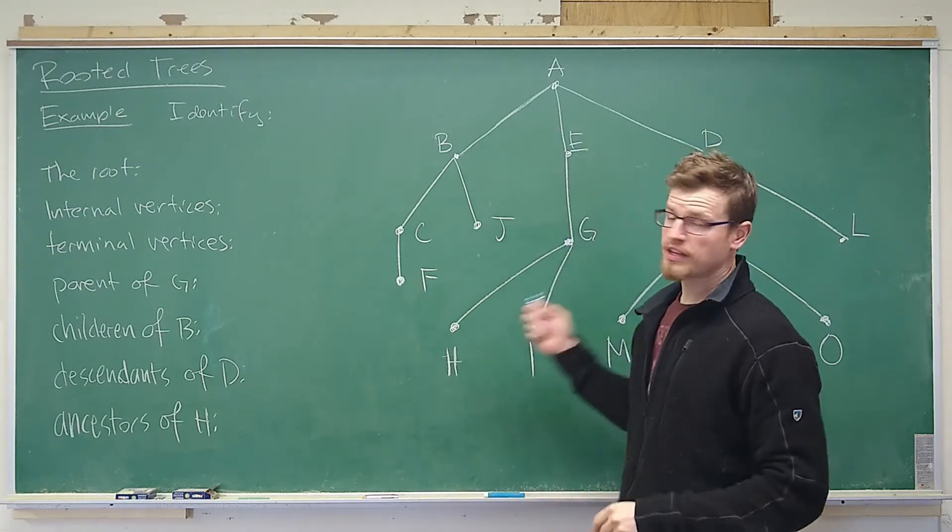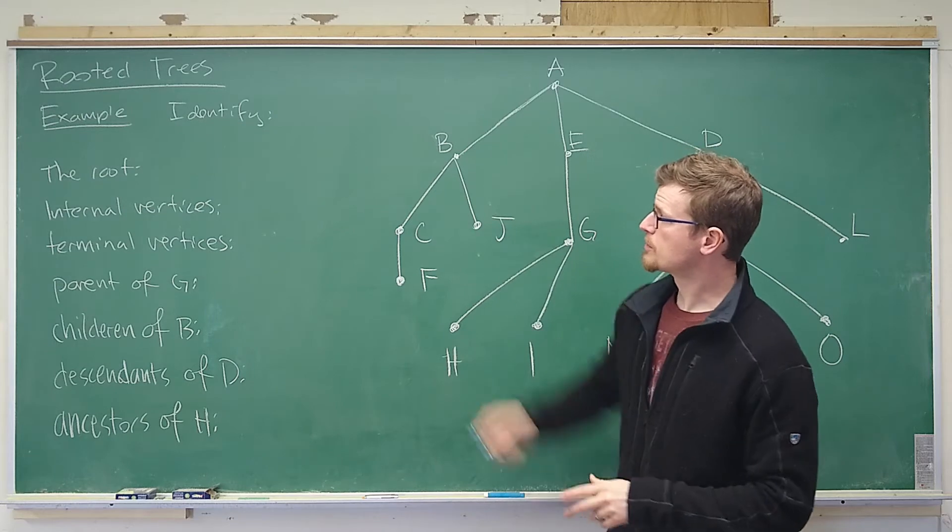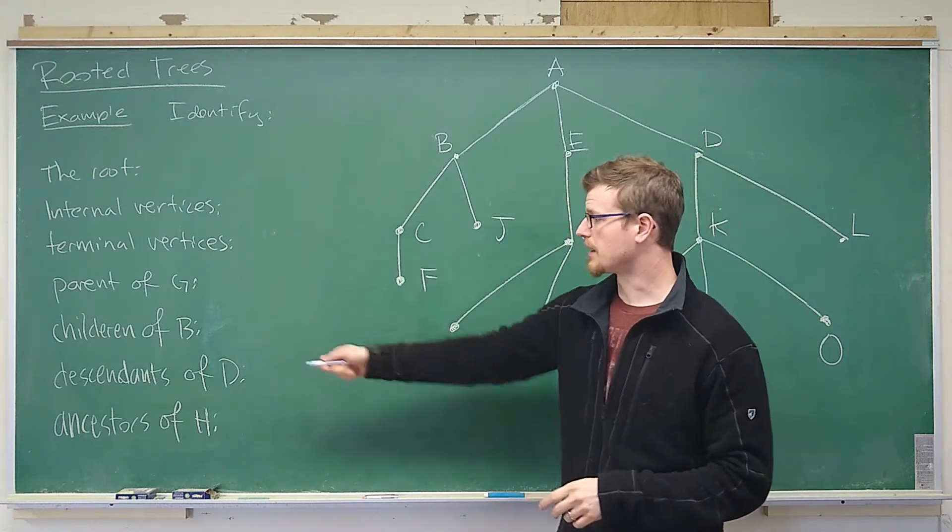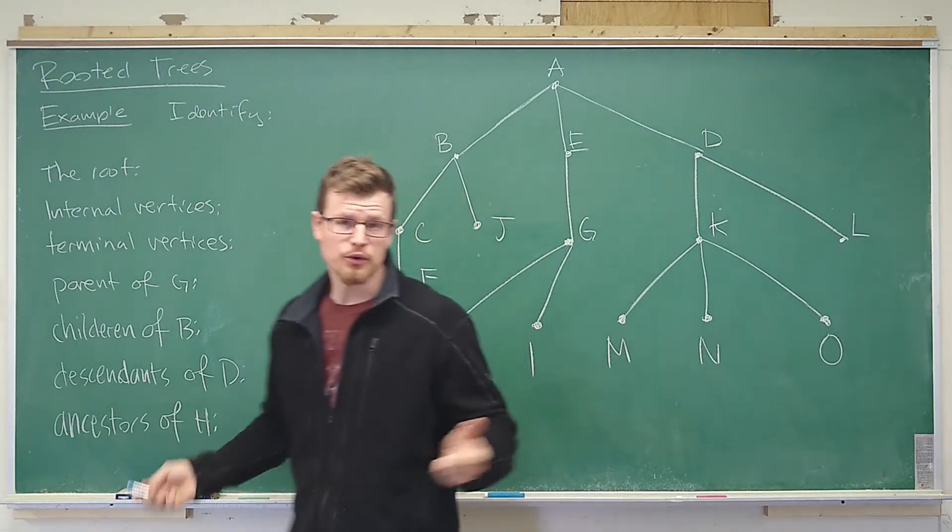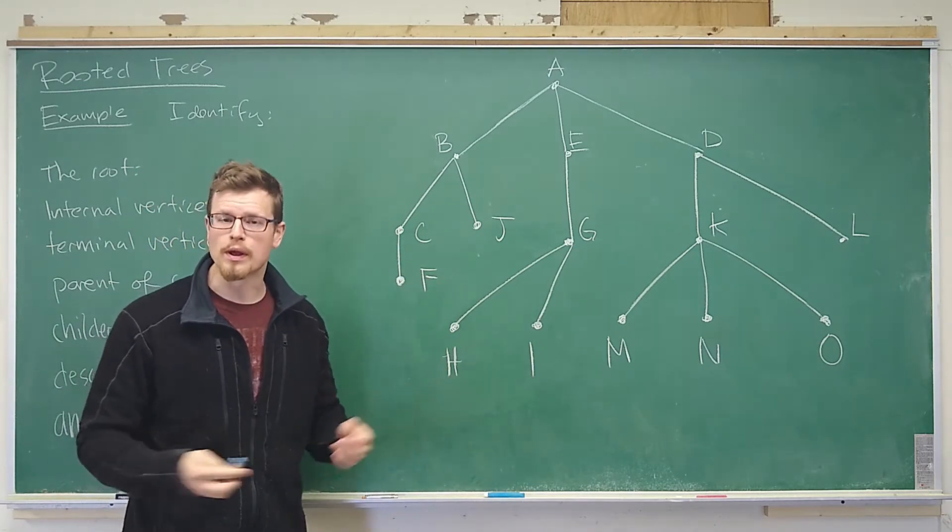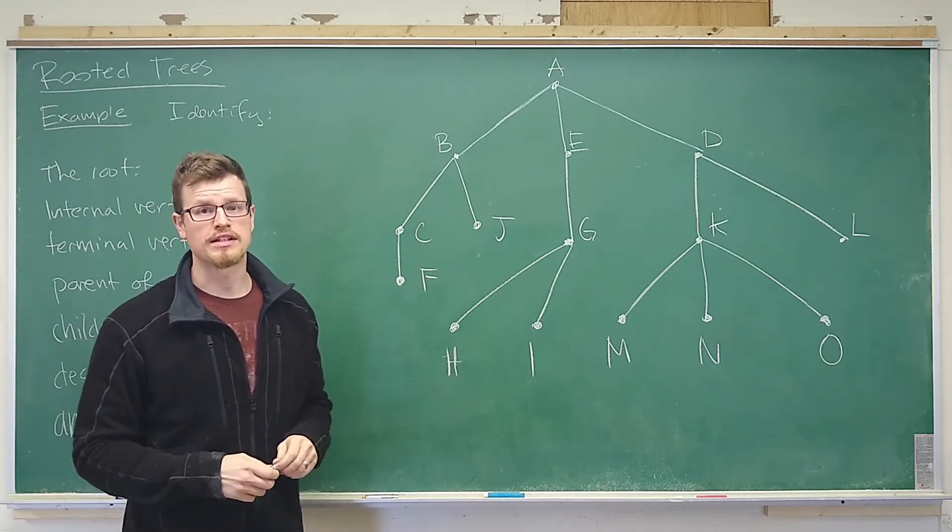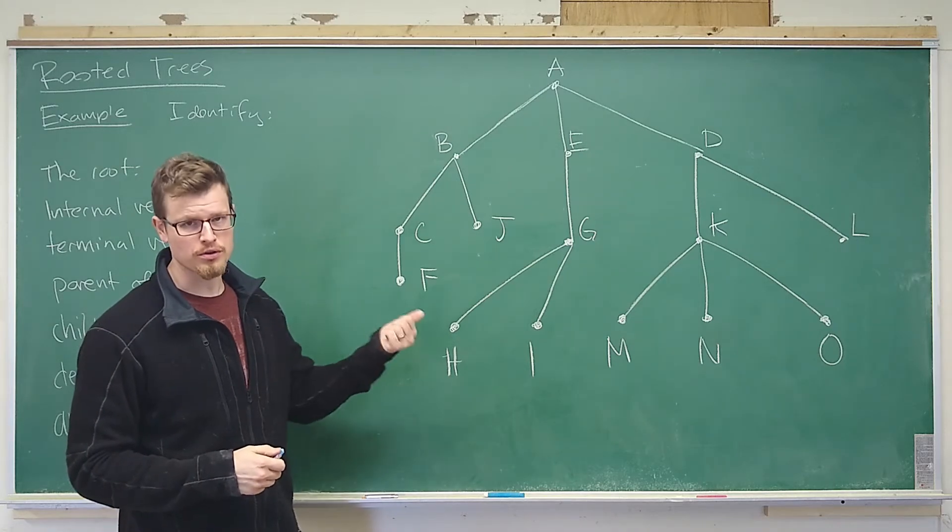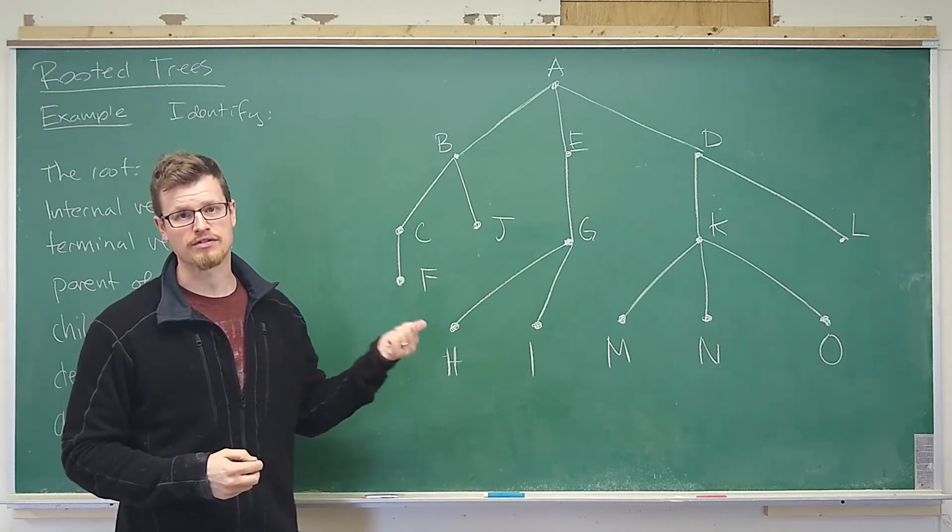So for this given rooted tree we want to identify these things. Now notice that this rooted tree is presented in the usual way, that is a rooted tree is a directed graph but here you'll notice that none of the edges have directions given.